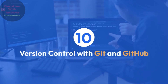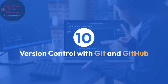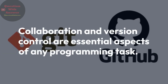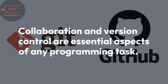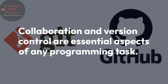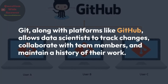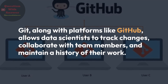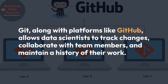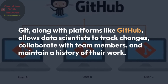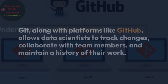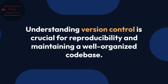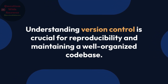10. Version Control with Git and GitHub. Collaboration and version control are essential aspects of any programming task. Git, along with platforms like GitHub, allows data scientists to track changes, collaborate with team members, and maintain a history of their work. Understanding version control is crucial for reproducibility and maintaining a well-organized code base.